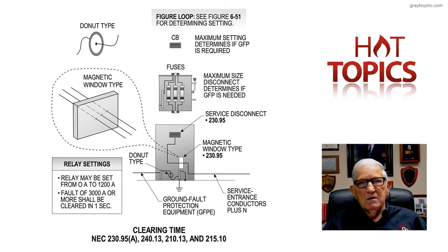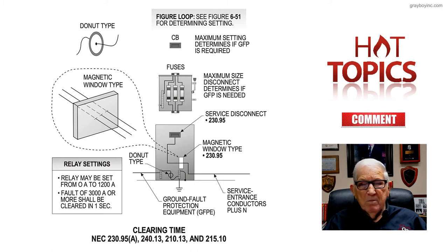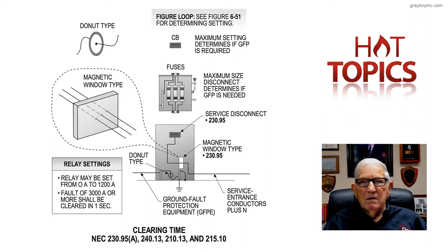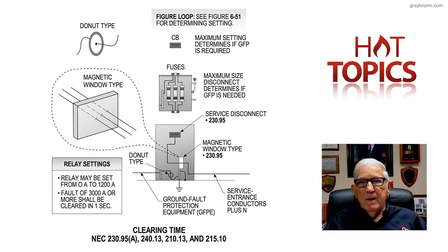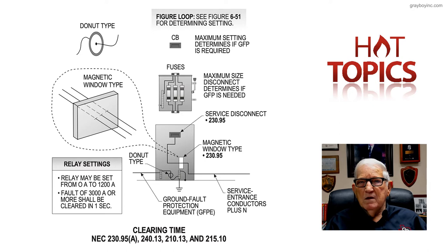In the illustration, we have relay settings. It basically says relays may be set from 0 to 1200 amp pickup, and a fault of 3000 amps or more shall be cleared in one second. That is the basic rule. The overcurrent device — say it's a circuit breaker, 1000 amps or more in rating, at a voltage of 482.77 volts — ground fault protection would be required there. If you have a disconnect capable of taking a 1000-amp or more rated fuse, then ground fault protection would be required there, even if you used a smaller size fuse.